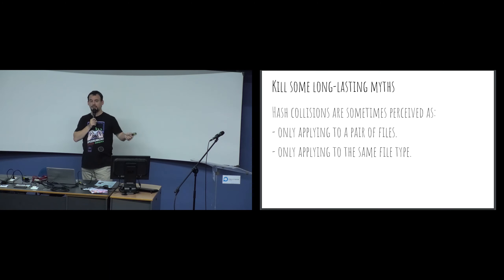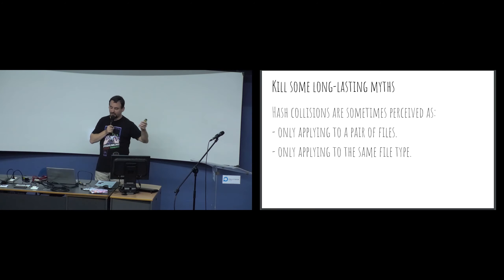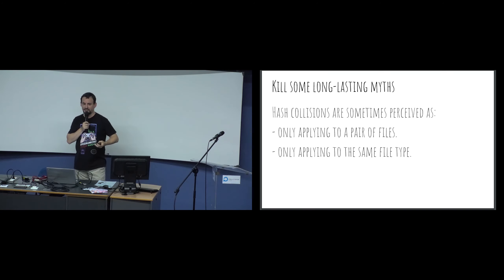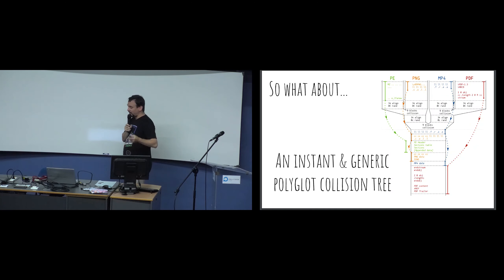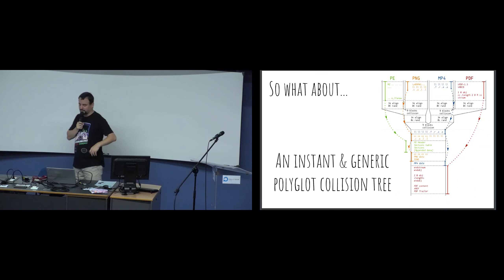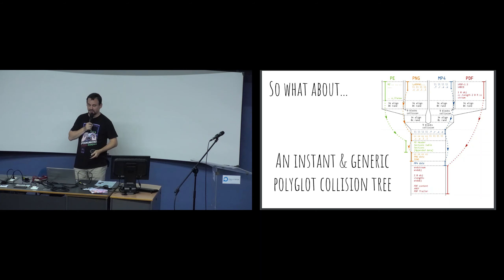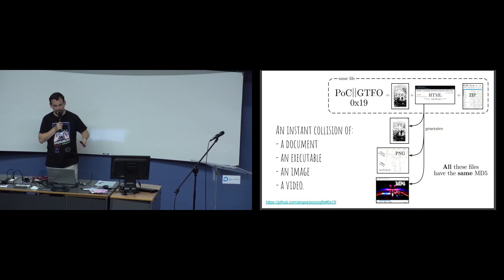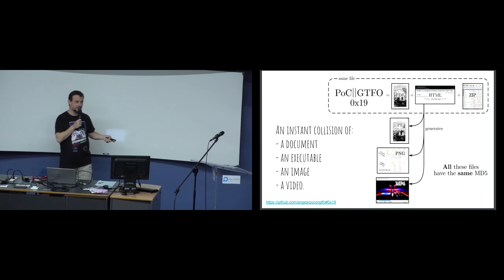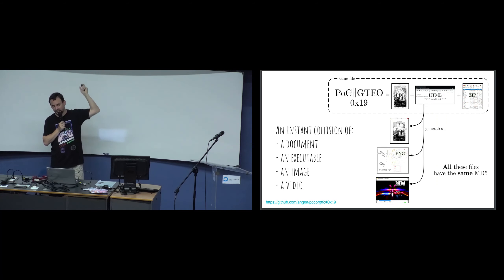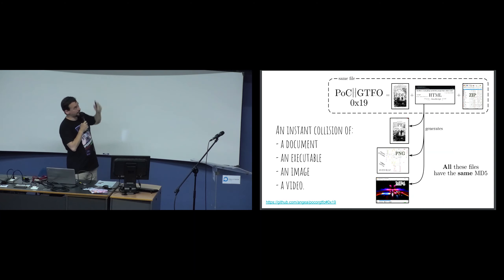There was an interesting myth - even among some of my colleagues - that hash collisions are always just between two files of the same type. I wanted to prove them wrong. If you're familiar with PoC or GTFO, there's a PNG, MP4, and PDF - four file types in the same file - all with the same MD5. It's an instant collision of a document, executable, image, and video. This file is also a polyglot.